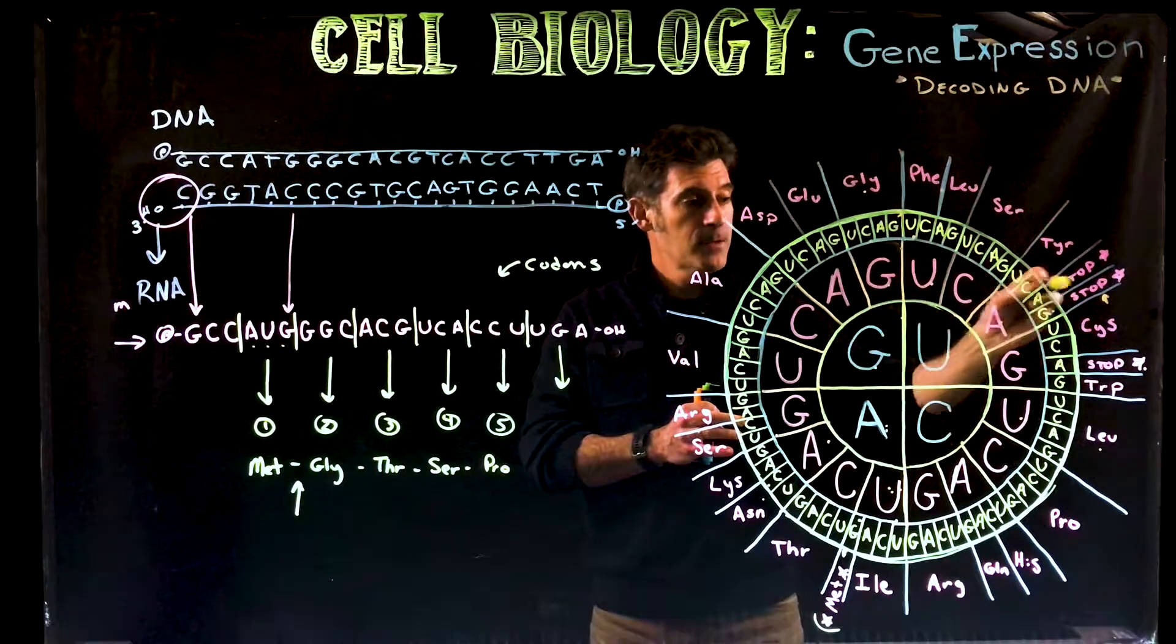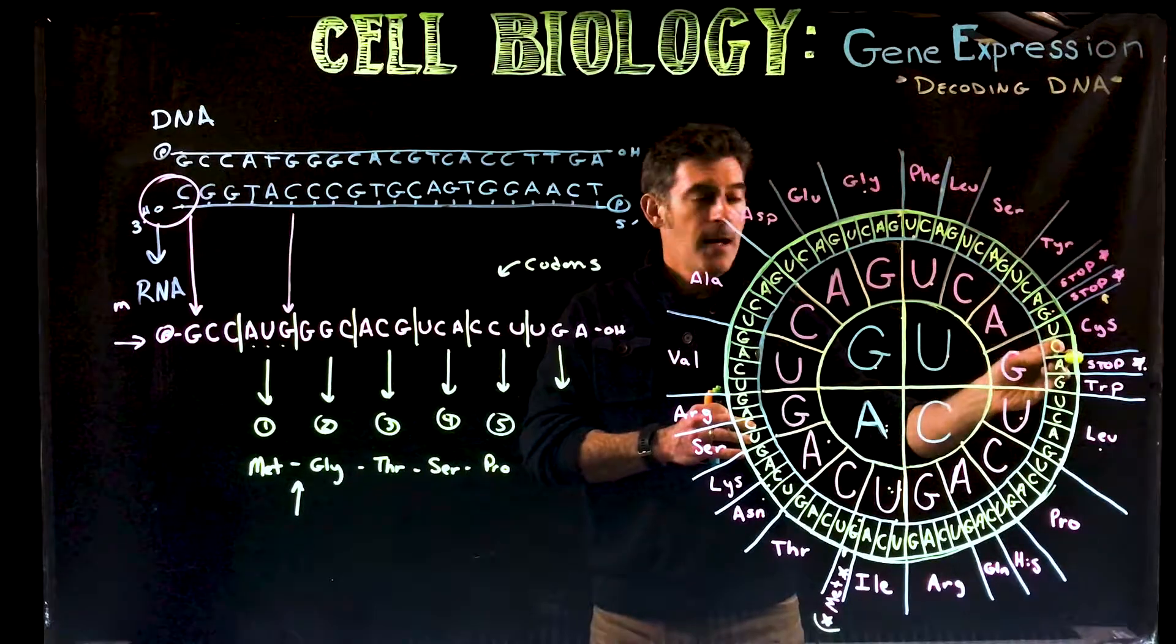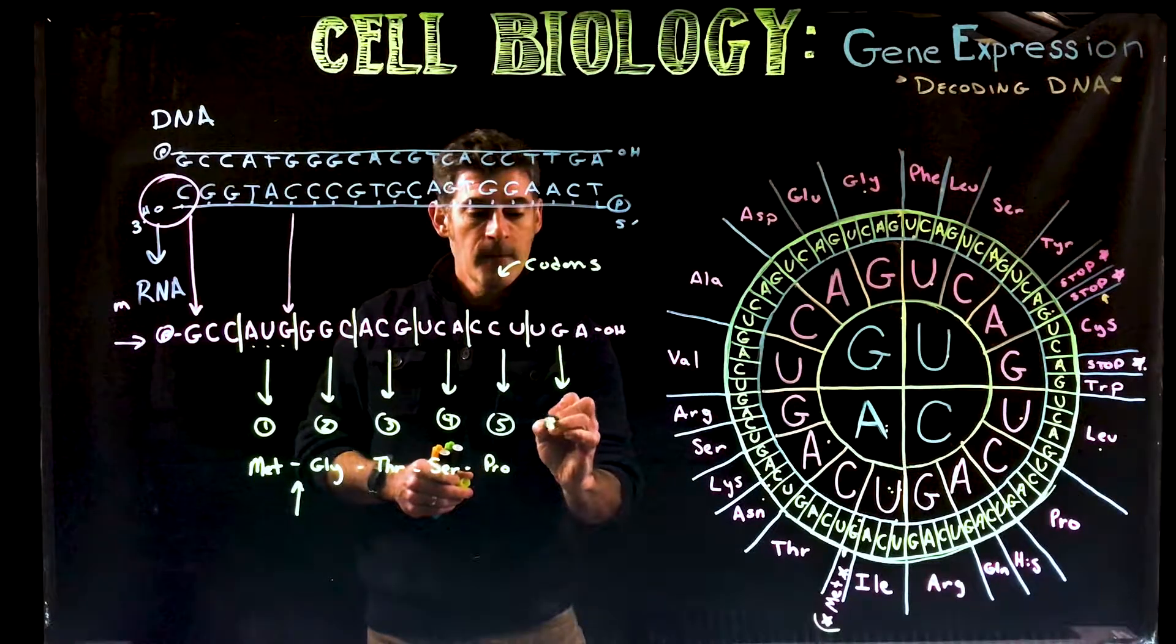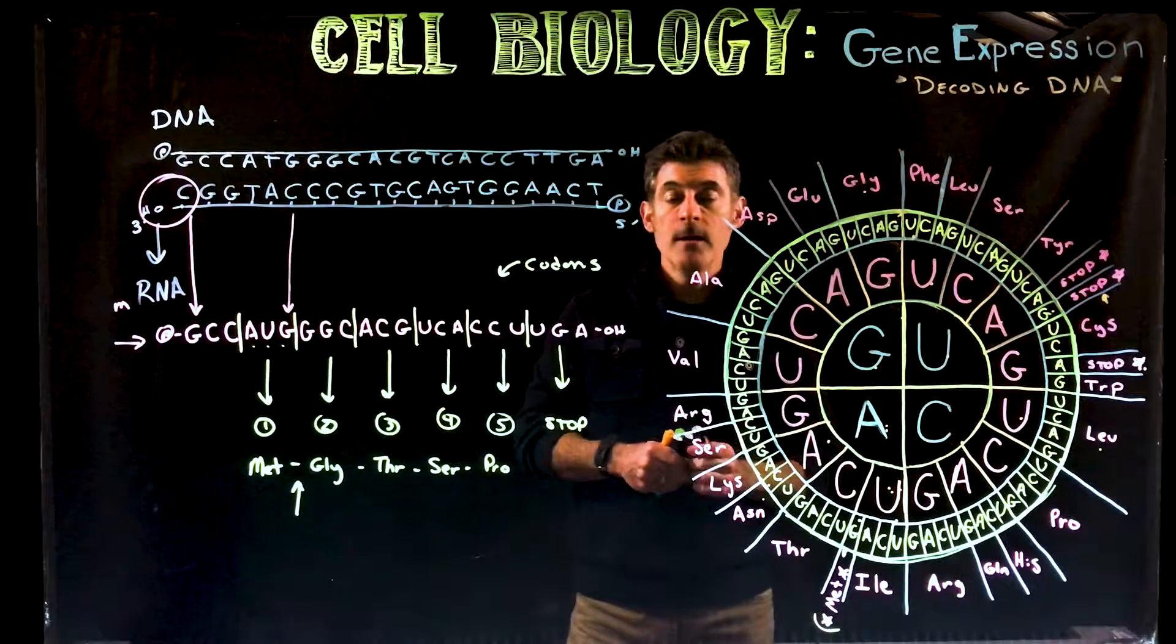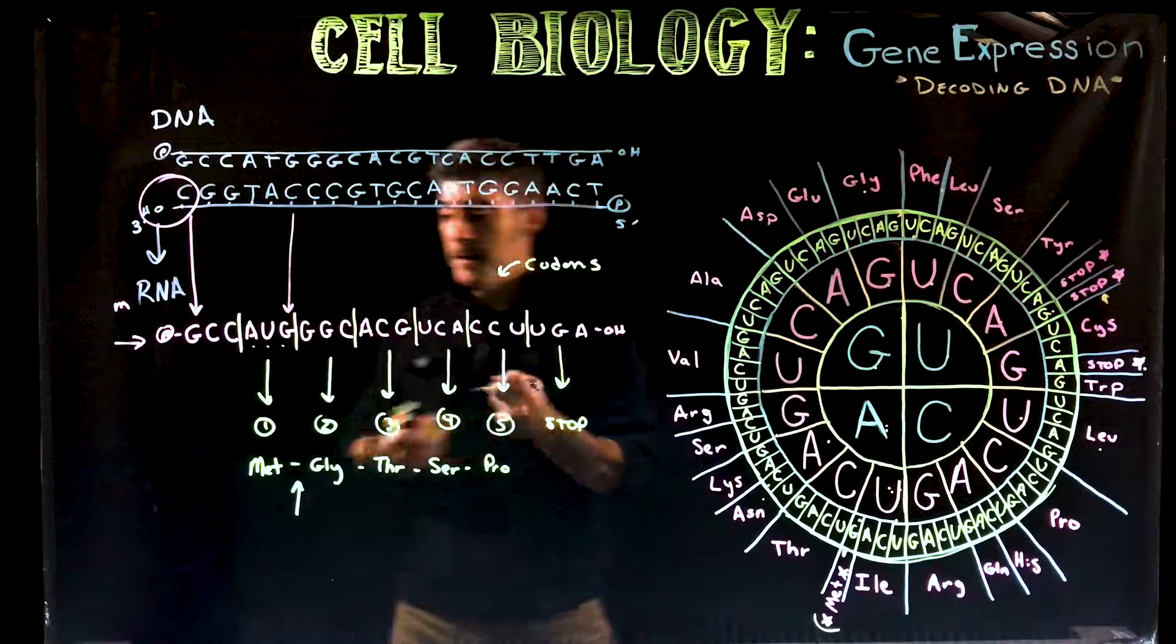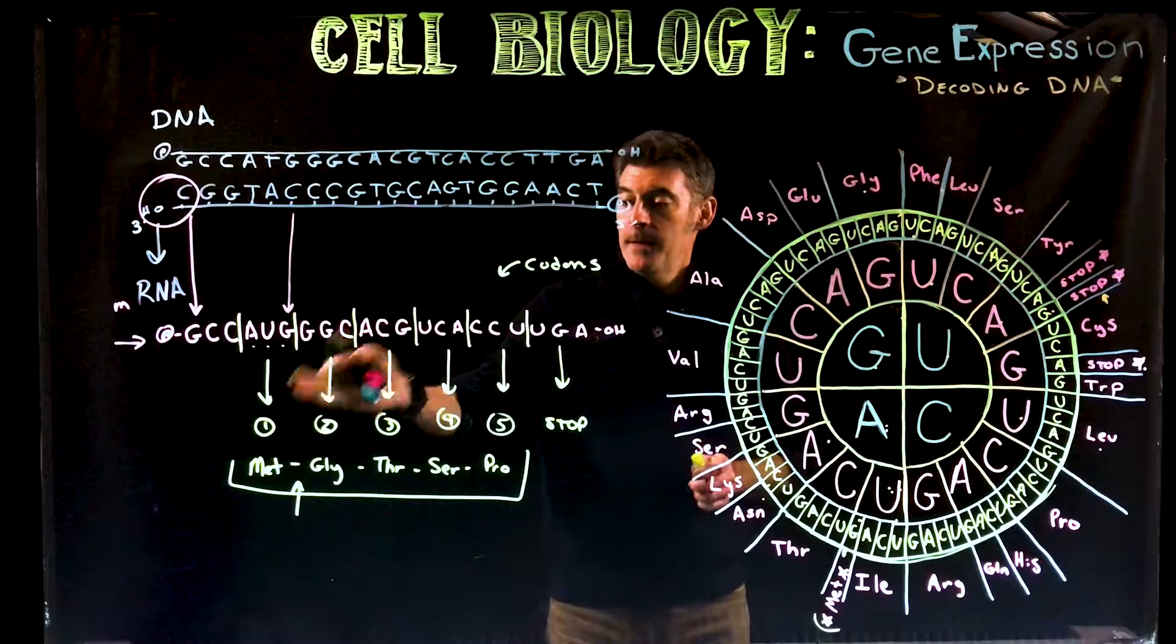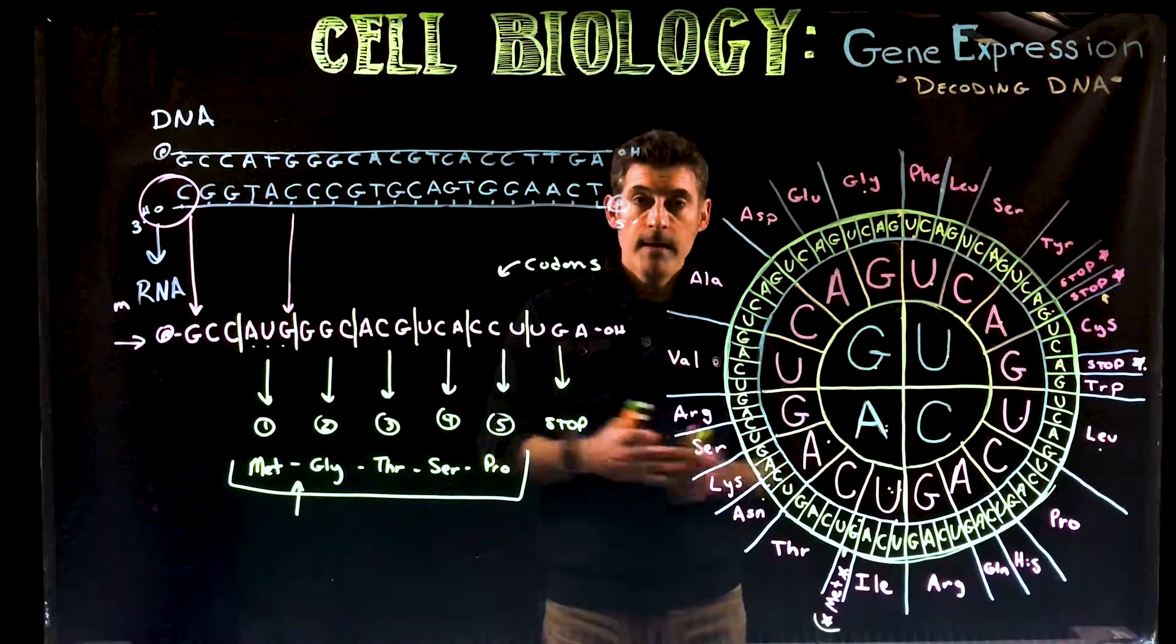That's one of the ones we have here. So there's not a sixth amino acid in our sequence. UGA codes for stop. That would bring on termination of translation. Protein synthesis would end. This would be our amino acid sequence, the five amino acids here: methionine, glycine, threonine, serine, proline. And that would be it.